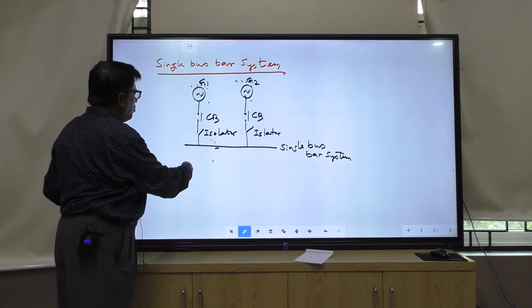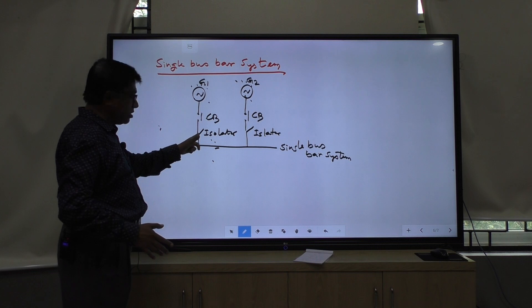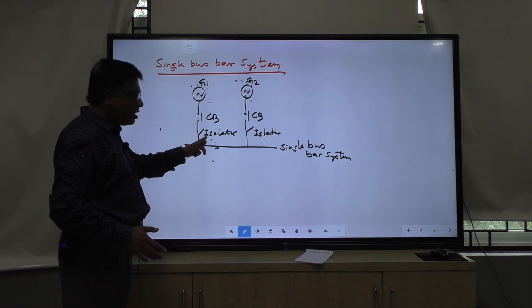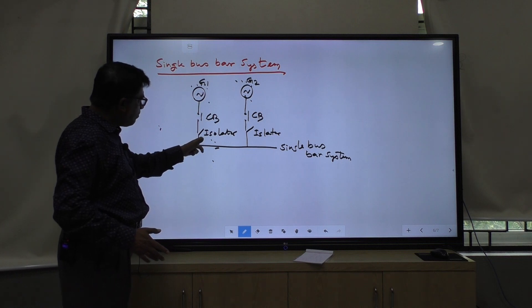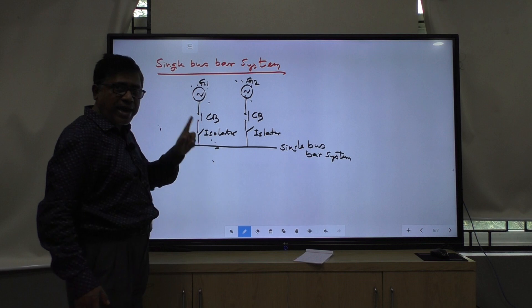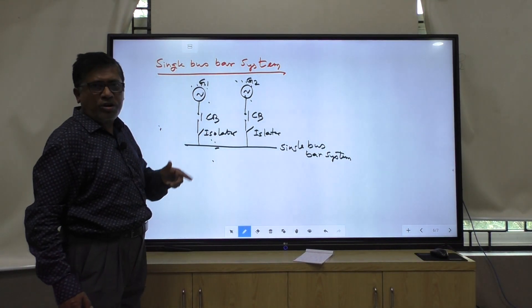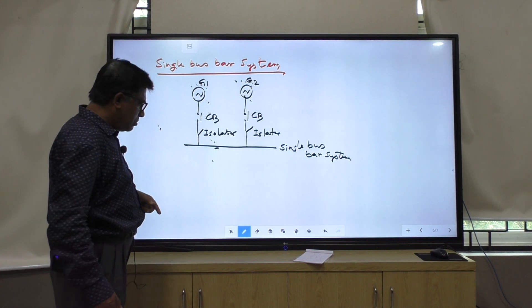It is just manually controlled. Open or close. No load condition. Very important thing I am discussing. Isolator should operate at no load condition. But breaker can operate at load condition or at no load condition.